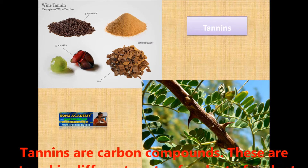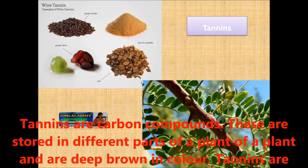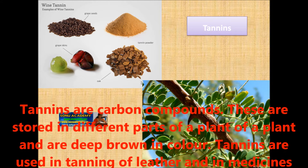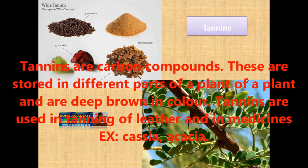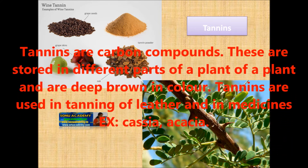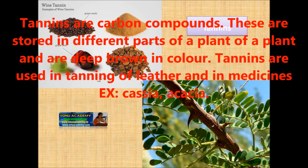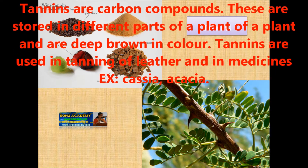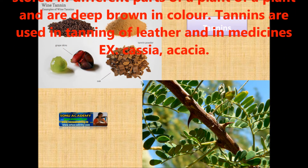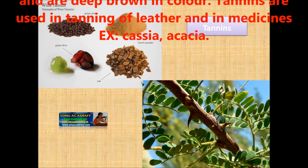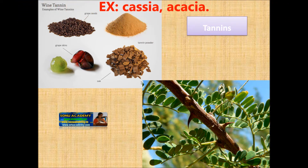Tannins are carbon compounds. They are stored in different parts of a plant and are deep brown in color. Tannins are used in tanning of leather and in medicines. Examples include Cassia and Acacia.